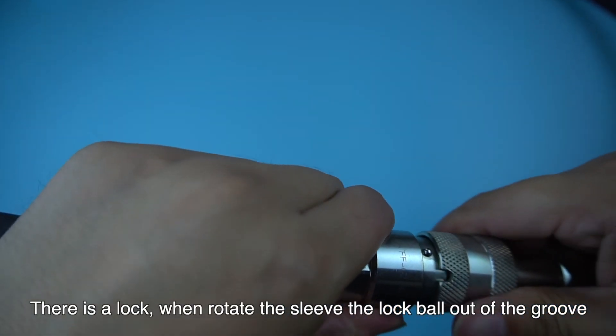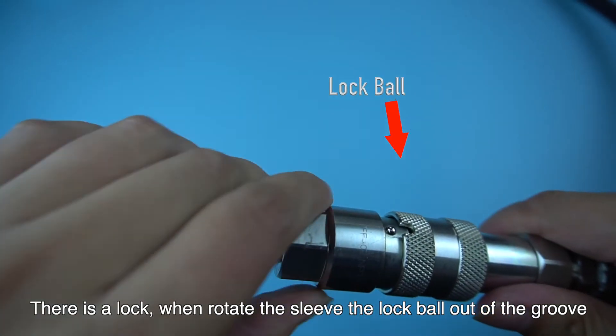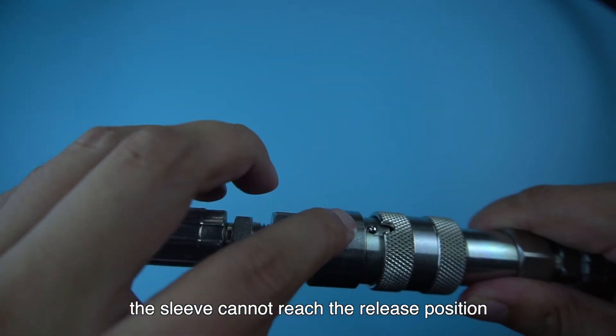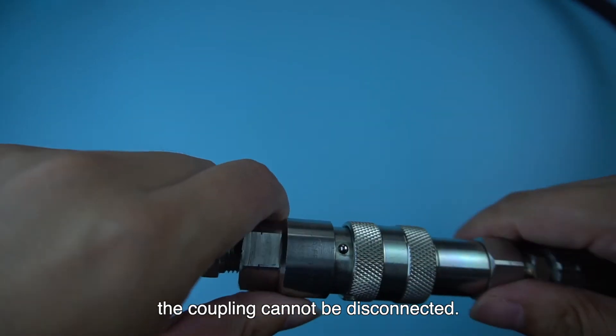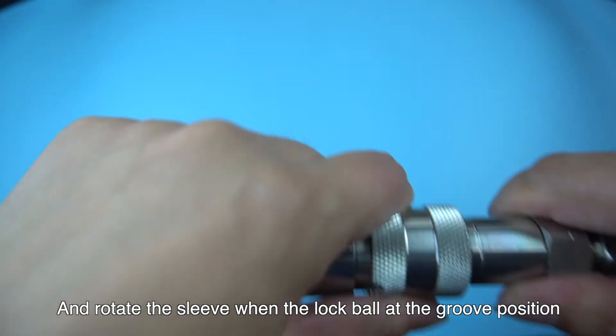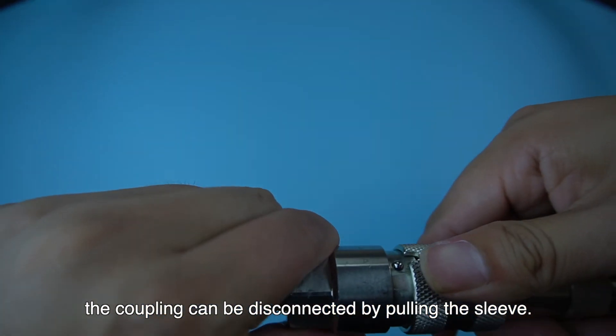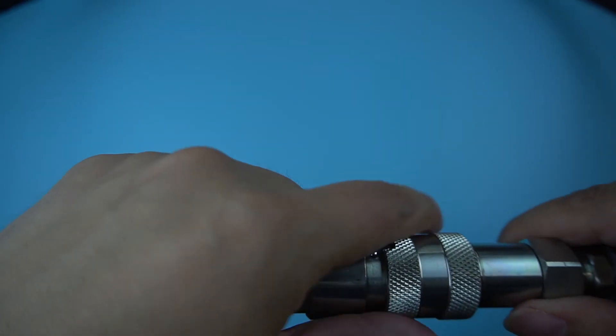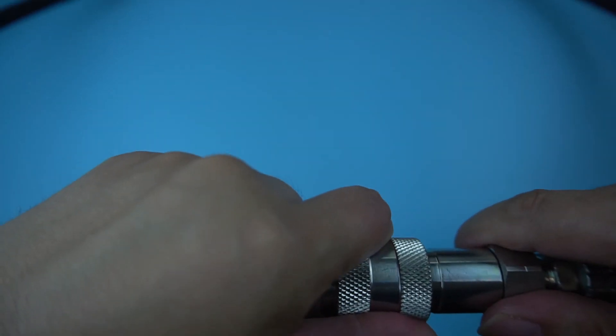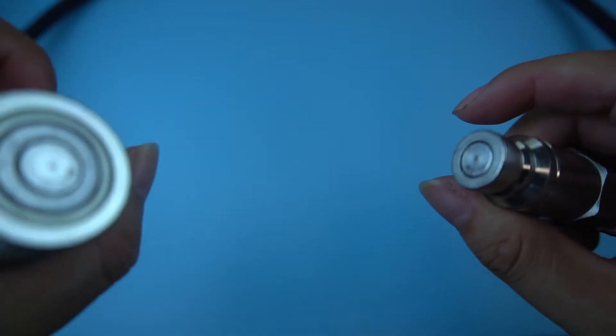There is a lock. When you rotate the sleeve, the lock ball is out of the groove, the sleeve cannot reach the release position, the coupling cannot be disconnected. And rotate the sleeve when the lock ball is at the groove position, the coupling can be disconnected by pulling the sleeve.